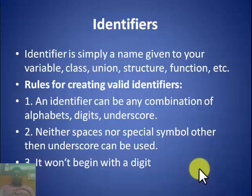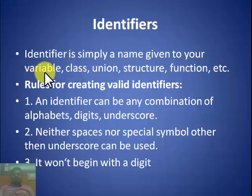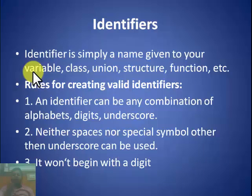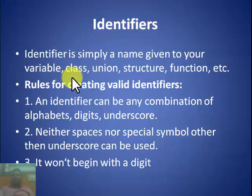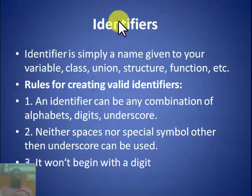Next are identifiers. Identifiers are simply names given to your variable, class, union, structure, function, etc. We have to give names to memory locations, and for giving those names there are rules. The names given to variables, classes, unions, structures, etc. are known as identifiers. We will discuss the rules for creating valid identifiers.